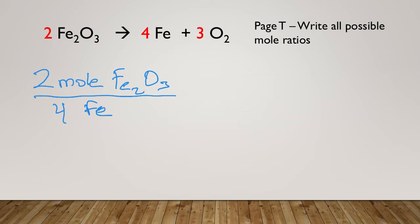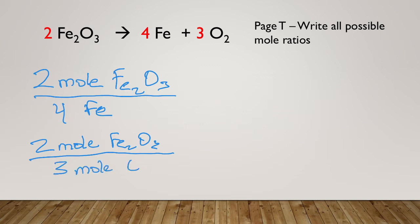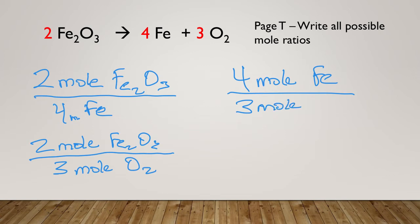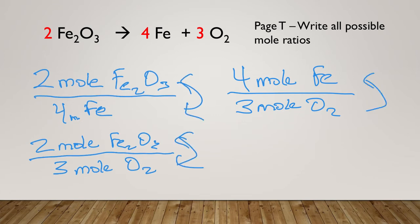So that's one mole ratio. We could also say two moles of Fe₂O₃ corresponds to three moles of O₂. There's one more: four moles of Fe corresponds to three moles of O₂. You might ask, what if I had four moles of Fe over two moles of Fe₂O₃? That's actually the same thing — you can switch the top and bottom of any of these. In a way you could say we have six different ratios, but since we're comparing the same two quantities, we say we have three mole ratios.